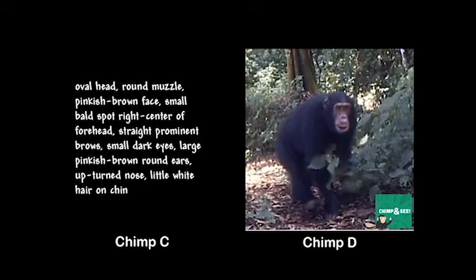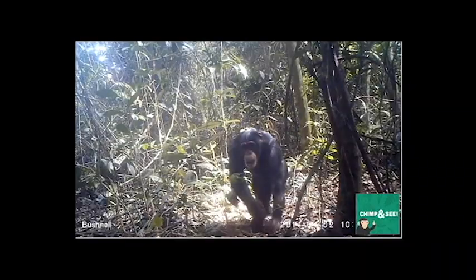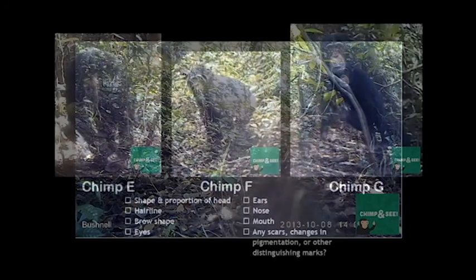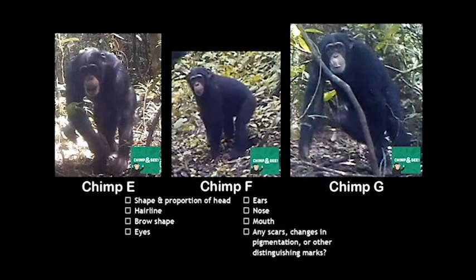Okay, one more, just for fun — you'll do this one all on your own. Here are three chimps that look very similar. Two of them are, in fact, the same chimp, and one of them is different. Study them closely and see if you can pick out the chimp that doesn't belong. Pause the video and take all the time you need. If you need help, press play again to get a hint of some specific features to look for. After the hint, I'll give you the answer. Good luck!